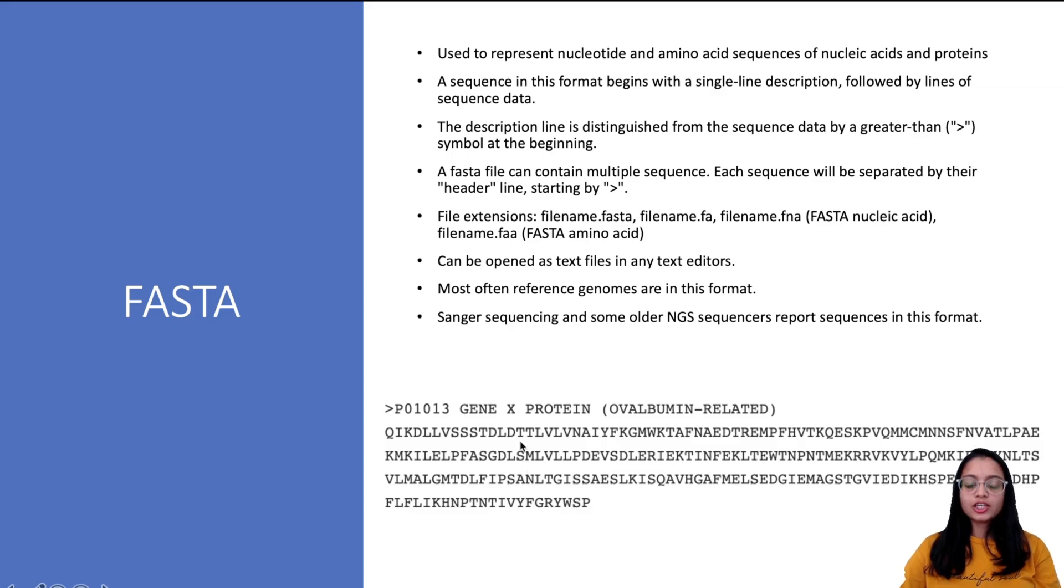Each FASTA file is divided into two parts: it contains a header and the sequence. The header always starts with a greater than symbol (>) and has some information present, which can be information about the sequence. A FASTA file can have one sequence or it can have multiple sequences.